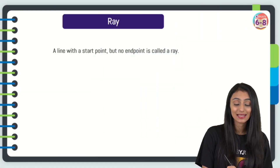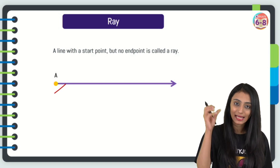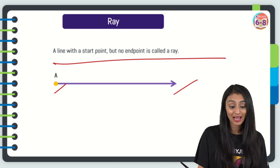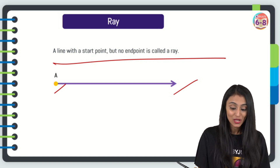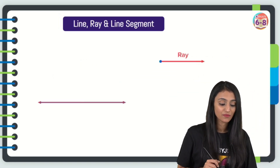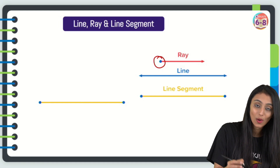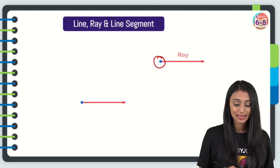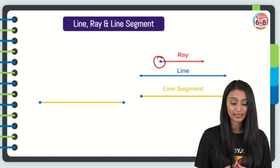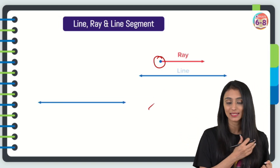This line is represented by AB. Now, if I extend it in only one direction — starting point A is fixed but it has no end point — that's what a ray is. A ray is a line with a starting point but no end point, represented here by AB. So we have a line extended infinitely in both directions, a ray with one starting point and no end point, and a line segment with two endpoints.